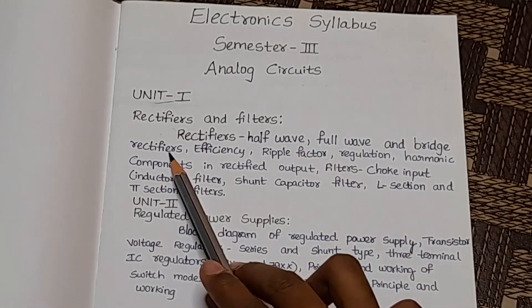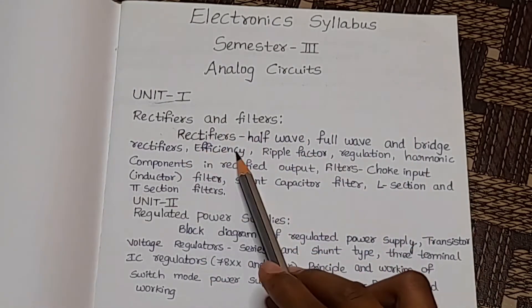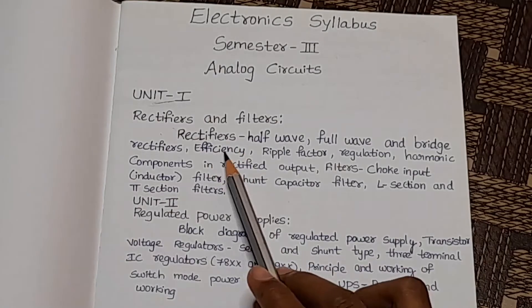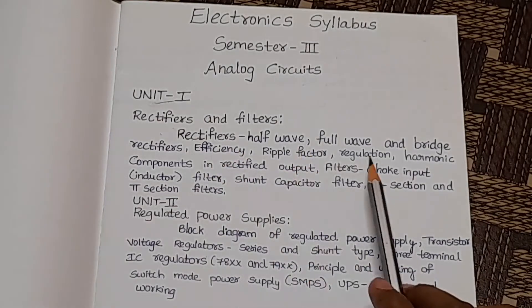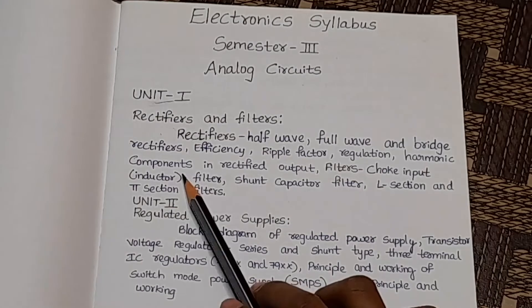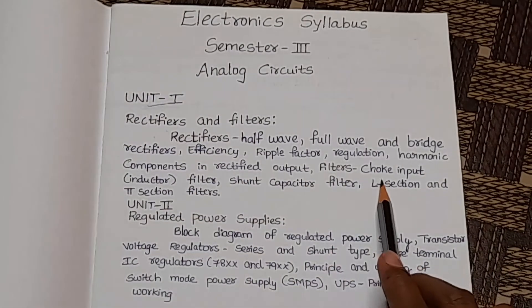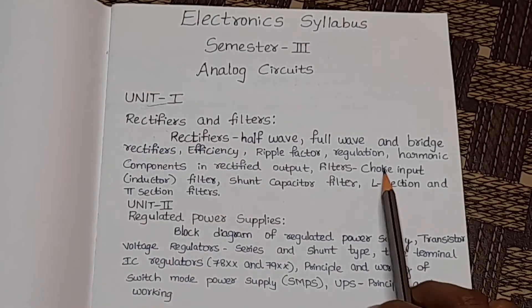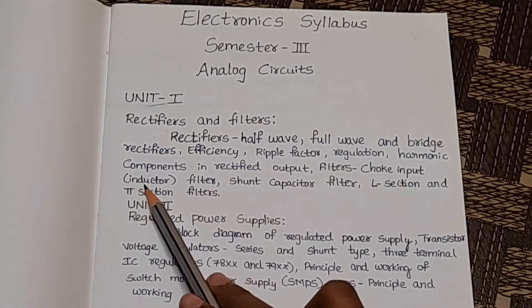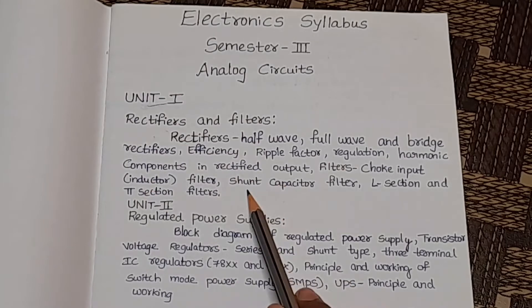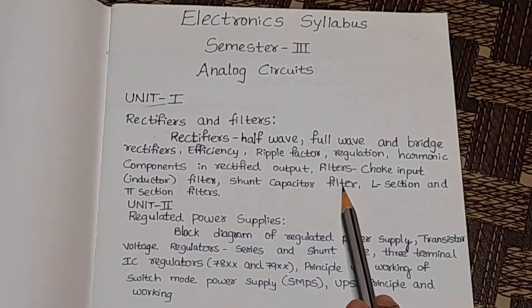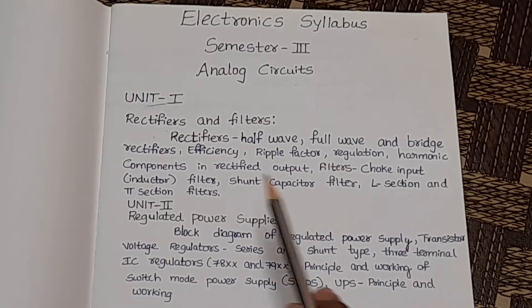full-wave, and bridge rectifiers. In these three types of rectifiers, we will discuss efficiency, ripple factor, regulation, and harmonic components in rectified output. In filters, there are four types: choke input filter (also called inductor filter), shunt capacitor filter, L-section filter, and pi-section filter.